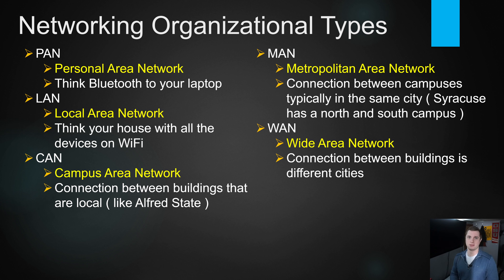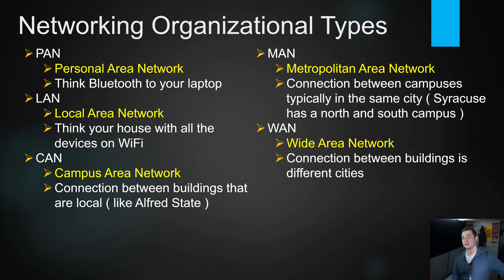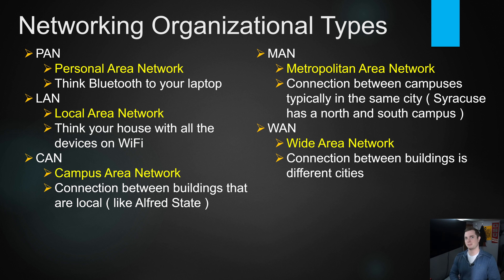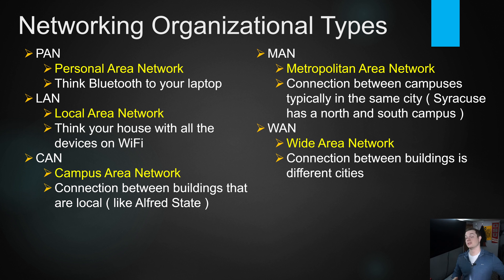PAN — a personal area network. Think Bluetooth devices: something very personal, doesn't cover much space, but it's still a network of interconnected devices, like these Bluetooth headphones right here. CAN — campus area network — is a series of internal networks. Alfred State is a good example: our CIT domain is a different network than the main Alfred State campus, and the health building has its own domain, which is a different network from ours.